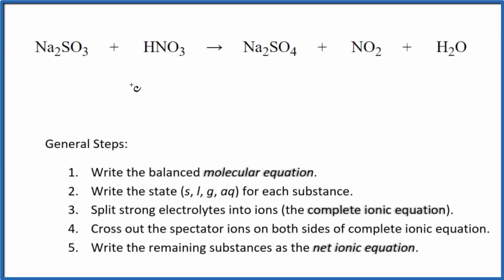In this video, we'll write the balanced net ionic equation for Na2SO3 plus HNO3. This is sodium sulfite and nitric acid. It's important to note that this is concentrated nitric acid. If you had dilute nitric acid, you would get different products. There's a link in the description if you're dealing with dilute nitric acid. Here we're working with concentrated.